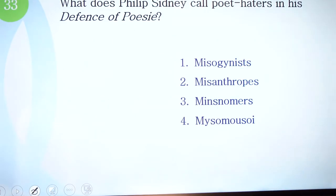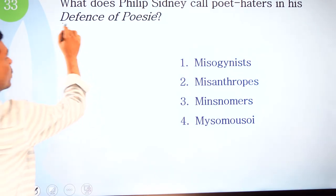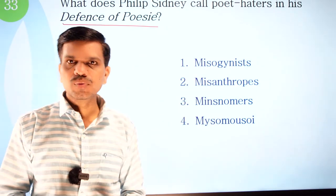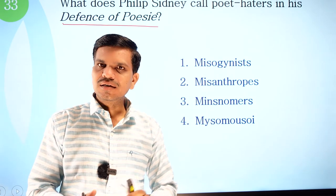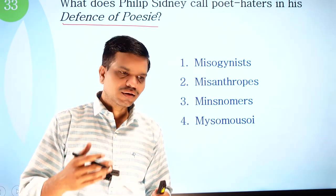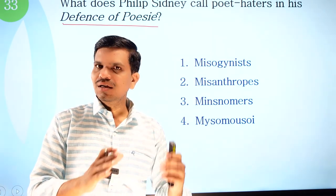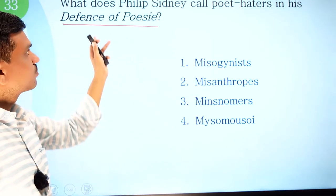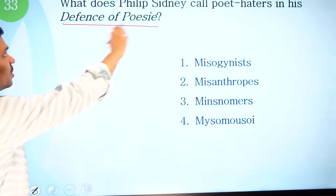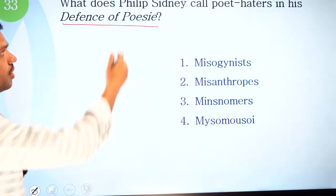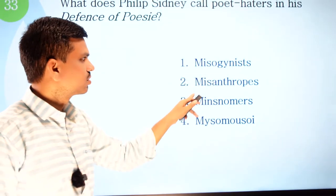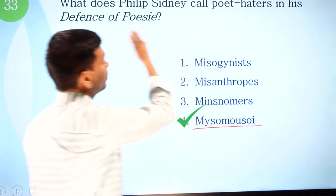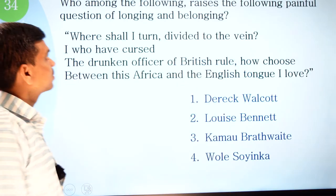Question 33: what does Philip Sidney call poet haters in his Defence of Poesy? This work is a response to Thomas Love Peacock, who abused poets and proclaimed that poets are not important in the state, adopting Plato's principle. Sidney's reply in Defence of Poesy names poet haters with a specific term. Options are misogynists, misanthropes, misnomers, and misomousoi. The correct option is number four — misomousoi.